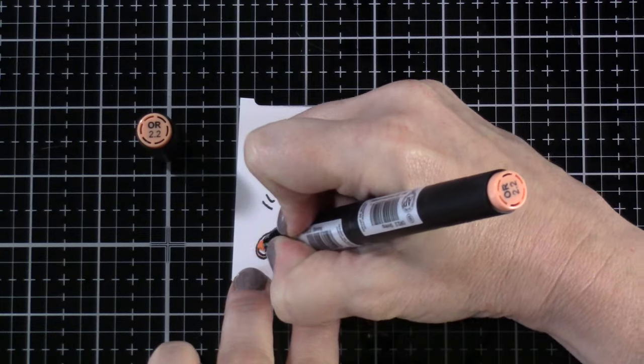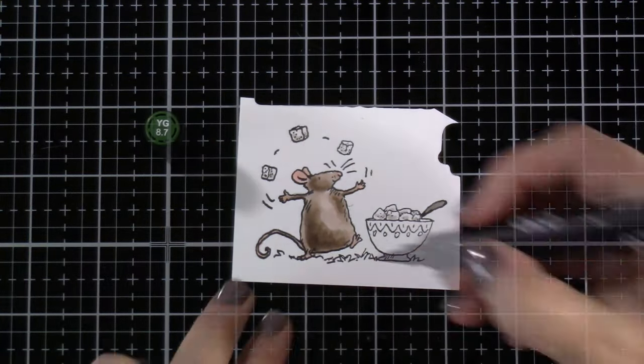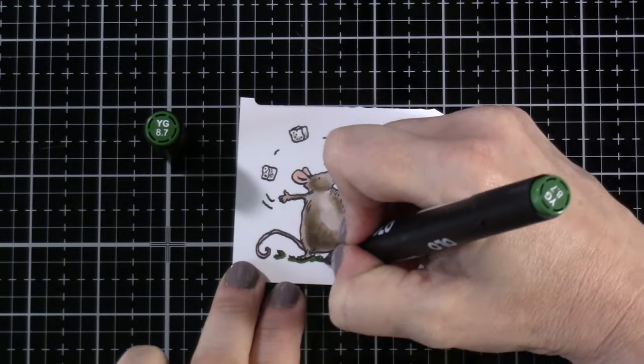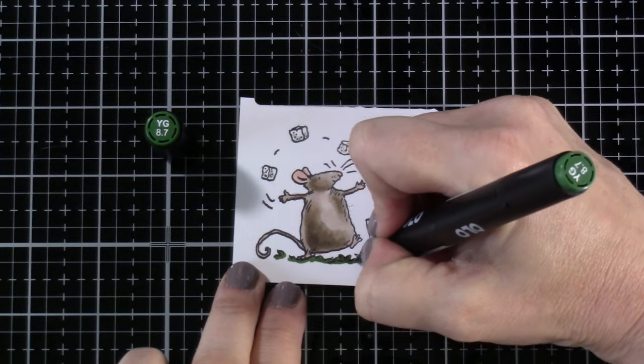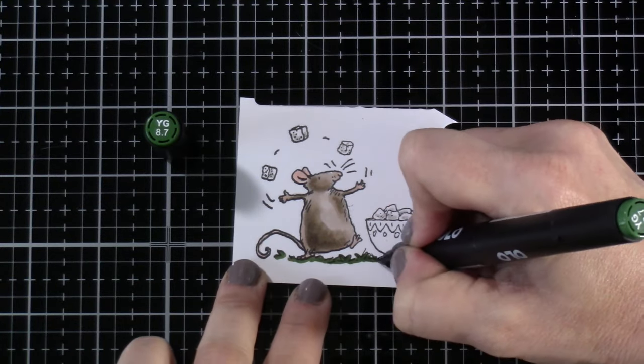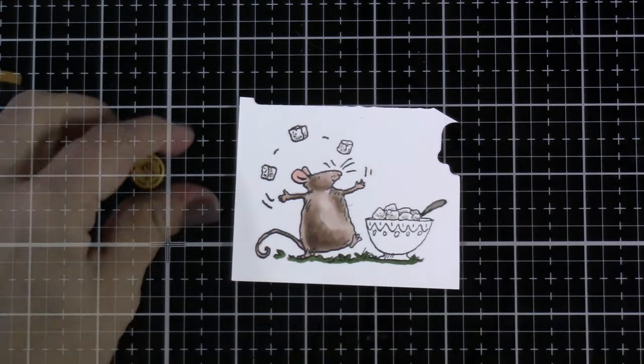We'll bring in some OR 2.2 for his tail, his hands, and his feet, and then I've got some grass down at the bottom. You'll see when I bring in that piece of patterned paper just how pretty that is and how well those go together.